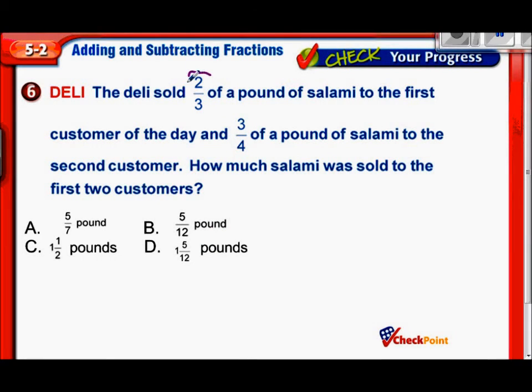The deli sold two-thirds of a pound of salami to the first customer, and three-quarters to the second customer. How much salami was sold to the first two customers? This sounds like we're adding these together, because we need the total amount sold. So we have two-thirds plus three-fourths. Again, we have these unlike denominators. The least common denominator for three and four would be twelve.